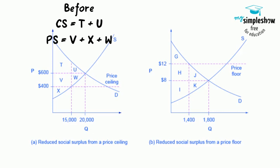A price ceiling is imposed at $400, so firms in the market now produce only a quantity of 15,000. As a result, the new consumer surplus is T plus V, while the new producer surplus is X.